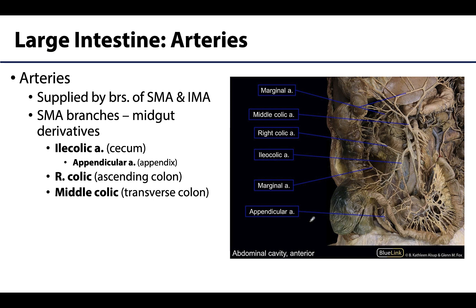In terms of arterial supply, it is helpful to keep in mind which parts of the large intestine are derived from the midgut — supplied by SMA branches — versus the hindgut — supplied by branches of the inferior mesenteric artery (IMA). SMA branches include the ileocolic, which predominantly supplies the cecum and sends branches to the ileum and gives off the appendicular artery to the appendix. The right colic supplies the ascending colon, and the middle colic supplies the transverse colon.